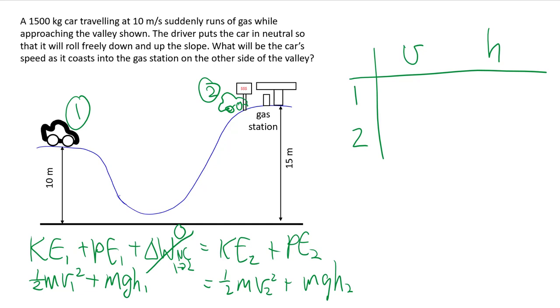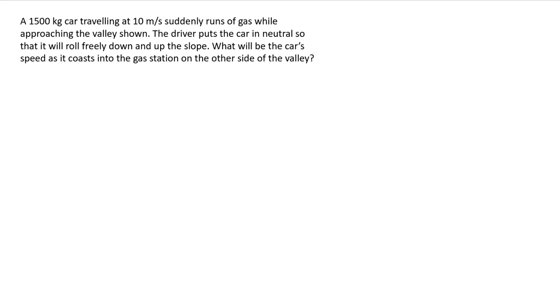At time one, my speed is 10 meters per second. At time two, I do not know my speed, but that is perfectly fine because that is the thing I'm trying to solve. Initial height at time one is at 10 meters. When we get to the gas station at time two or point two, we are at 15 meters in height. So now that we have everything, we basically just rearrange and solve. And we're solving for v2 here.